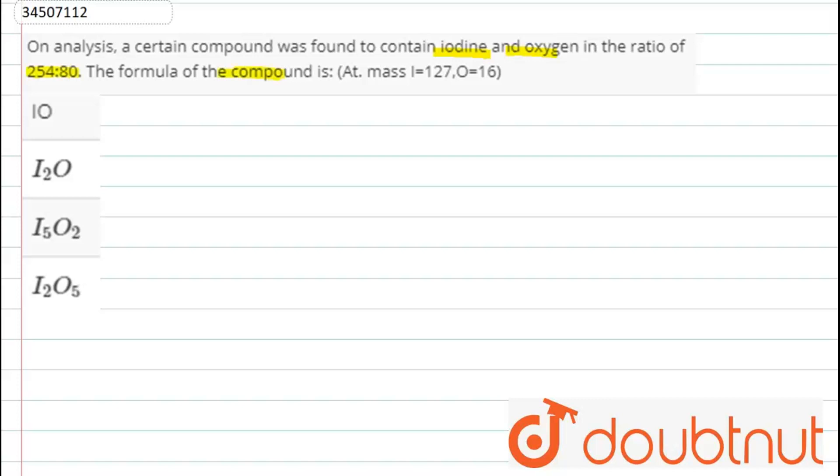As we know, the compound having iodine to oxygen is given as 254 to 80. This is the ratio of grams. And as we know, the atomic masses of iodine and oxygen are given.